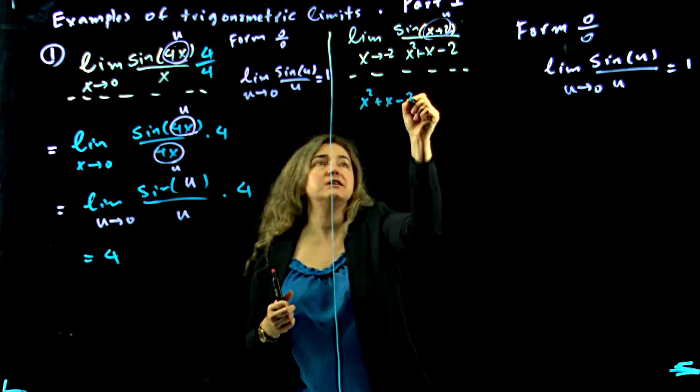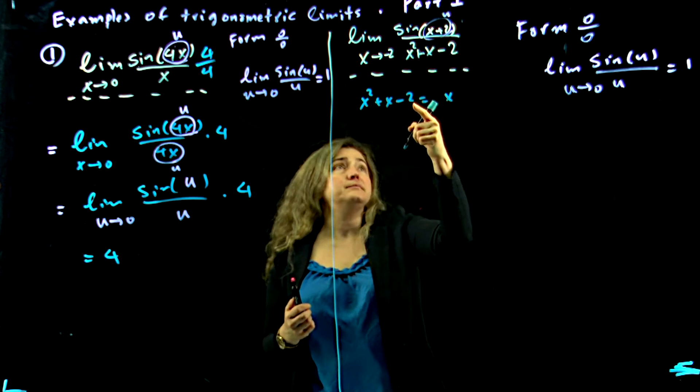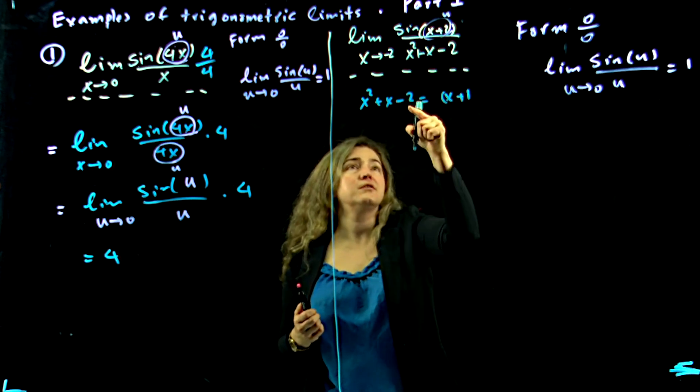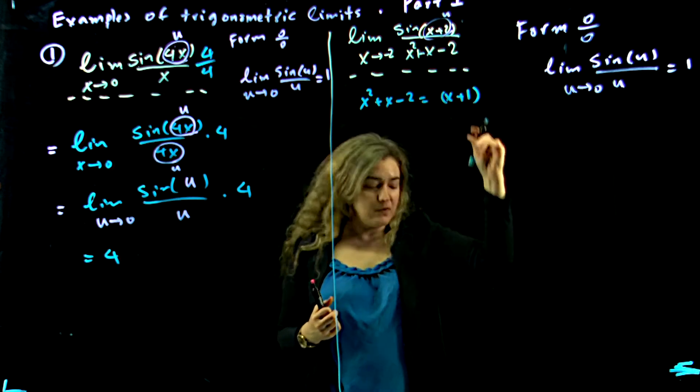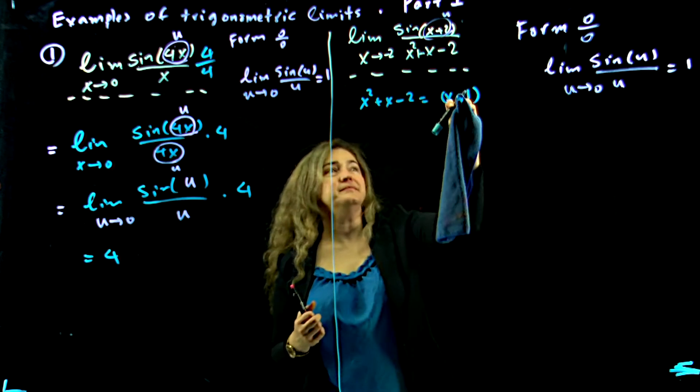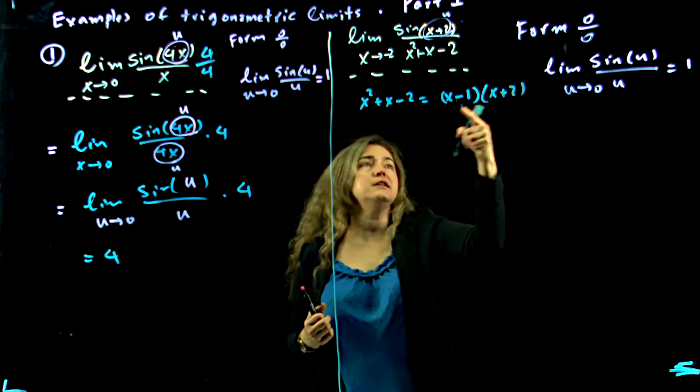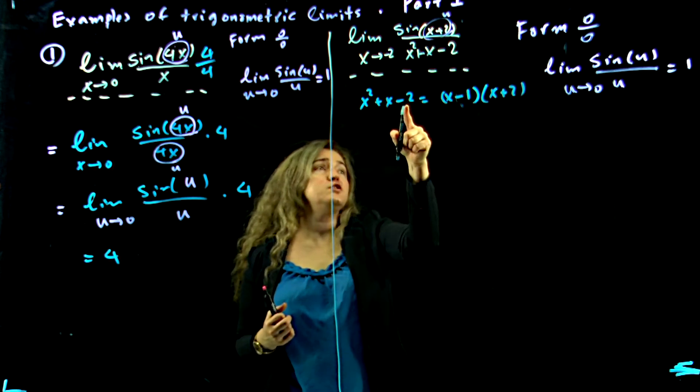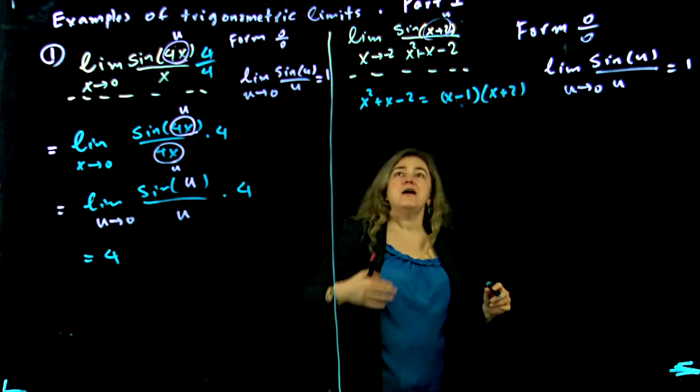x squared plus x minus 2 factors into x plus 1... right? Negative 2. No, x minus 1. Sorry. x minus 1 times x plus 2, right? Negative 1 times 2 is negative 2, and they add up to be plus 1.